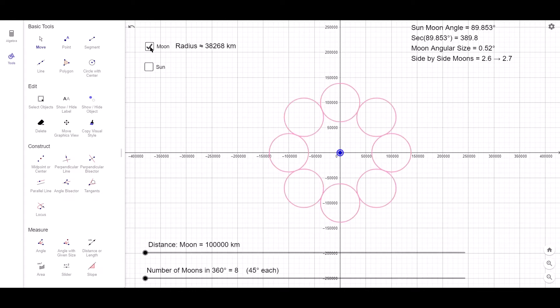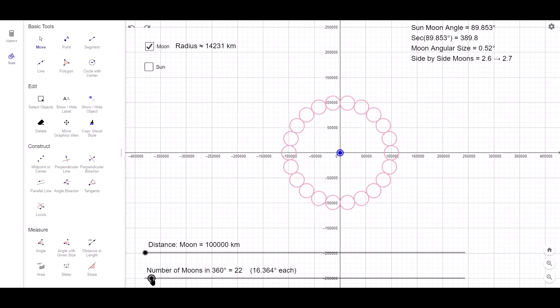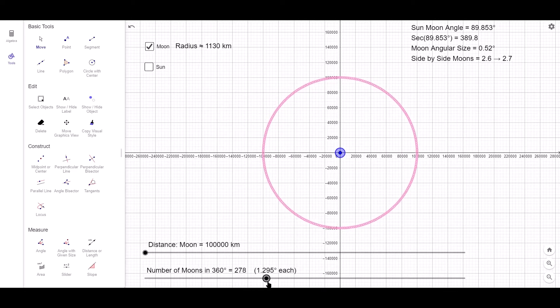To start off, I have 8 moons taking up all 360 degrees of the sky at an orbit of about 100,000 km away. The angular size of each being 45 degrees. But we don't want that. We want 0.52 degrees. So let me adjust that. So now I have 692 moons sitting side by side 360 degrees around the Earth.